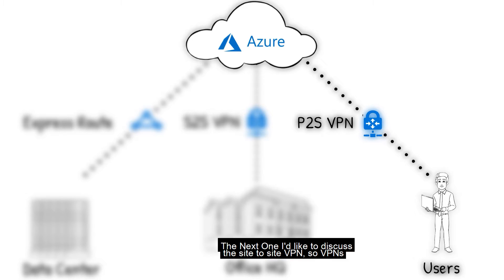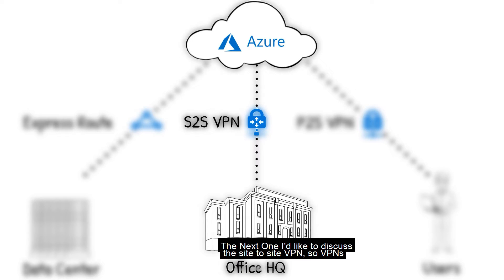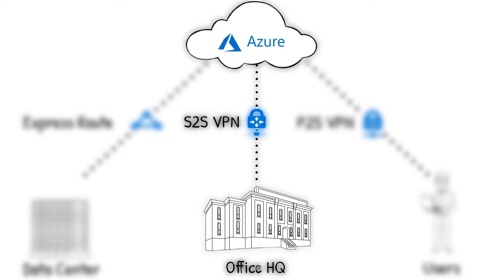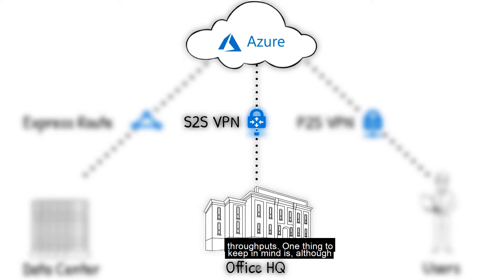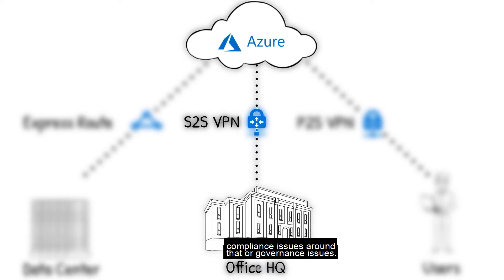The next one I'd like to discuss is site-to-site VPNs. VPNs are over the internet, they're over an encrypted tunnel, and they usually go between Azure and your office headquarters or wherever you would have your core network. This would provide great connectivity, and there are multiple SKUs with multiple throughputs. One thing to keep in mind is that although it is a secure tunnel, it is over the internet, which some organizations may not like. There may be compliance issues or governance issues around that.